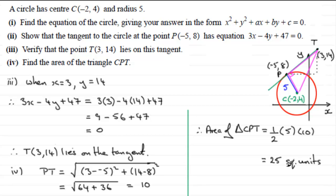The area of triangle CPT is 25 square units.